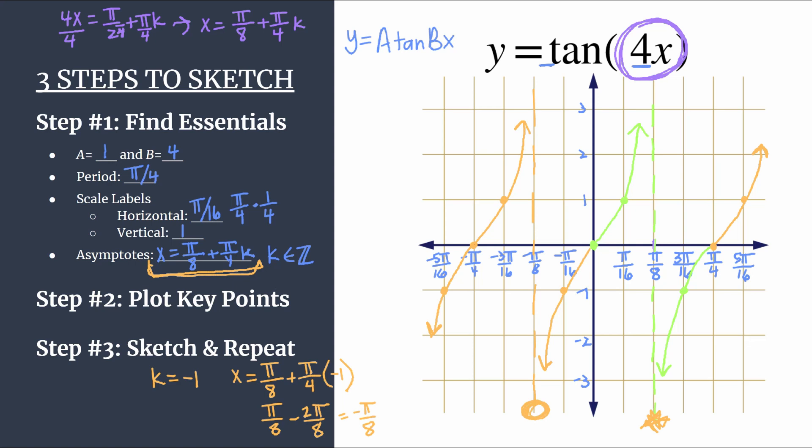So as you substitute in different values of k, you'll be locating different vertical asymptotes along your graph. So it's actually a really clever way to write just one equation that will give you all the asymptotes. Because if you tried to list them out, you'd be listing numbers forever. But with this little equation, once you learn how to use it, it's actually really efficient. And it's really helpful to find whichever asymptote you need.